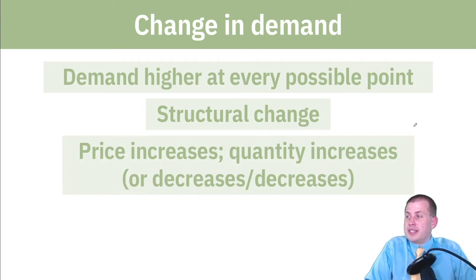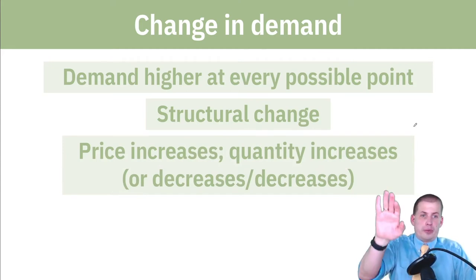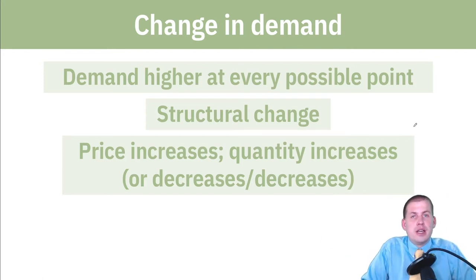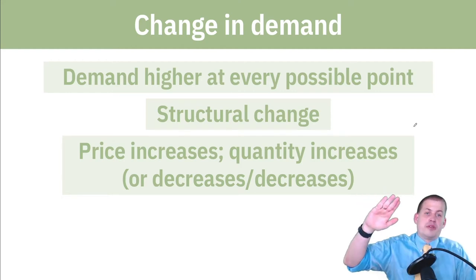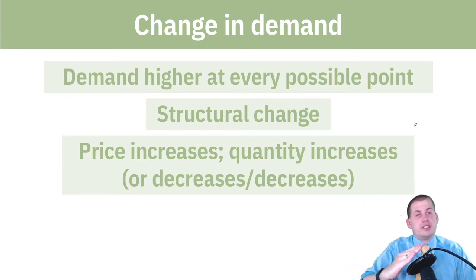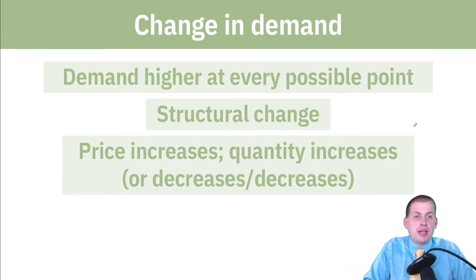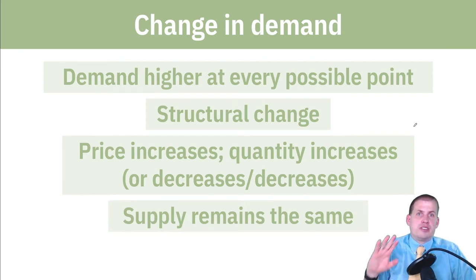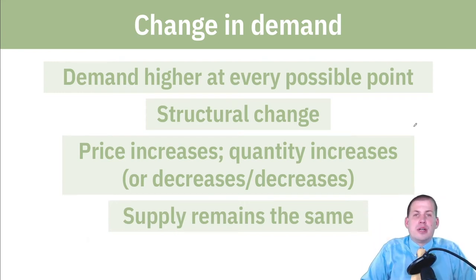When price and quantity both increase or both decrease at the same time, that's generally a structural change. A tax is seen as a structural change because it changes the whole system of the market — both price and quantity change simultaneously. Supply will generally remain the same if you're just targeting demand.